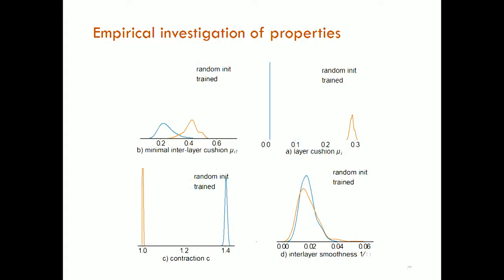Empirical investigation: you can check how these parameters improve during training. At random initialization — when you initialize the network before training — the layer cushion is low. Later on it increases a lot. Similarly, inter-layer cushion also increases. Contraction identifying also increases. Inter-layer smoothness is actually already pretty good at random initialization and remains good. The driver of the theory turns out to be the single-layer cushion.